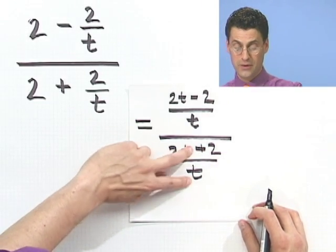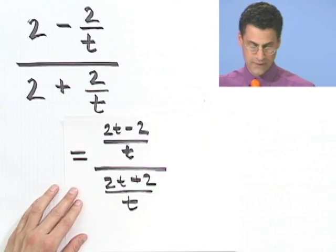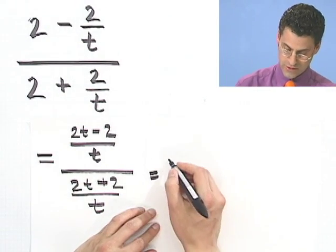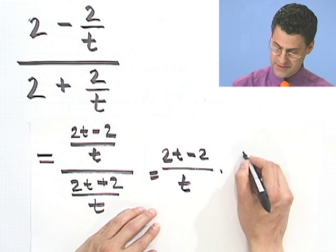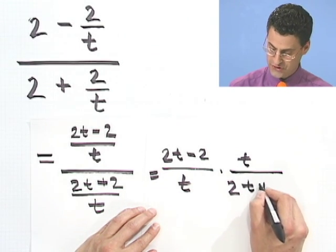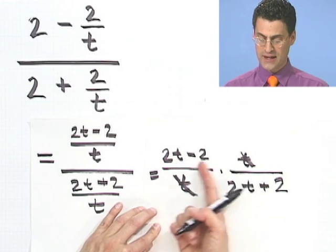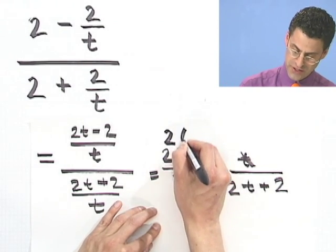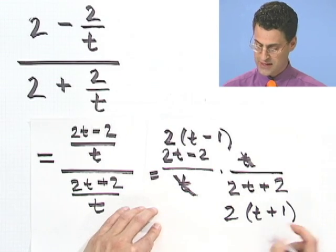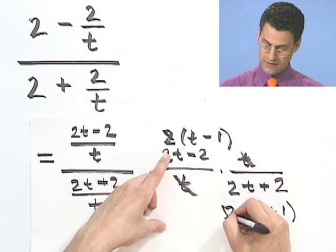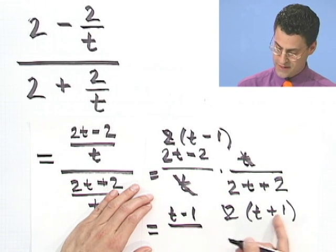And now you can happily invert and multiply. If you do that, you would see 2t minus 2, all over t, times t over 2t plus 2. Now you can notice the common factor of t that could cancel out. And you can see I can pull out a factor of 2 here, which gives me 2 times t minus 1, and a factor of 2 here, which gives me 2 times t plus 1. And then the 2s actually cancel out. So the bottom line is this thing equals, very simply, t minus 1 all divided by t plus 1.